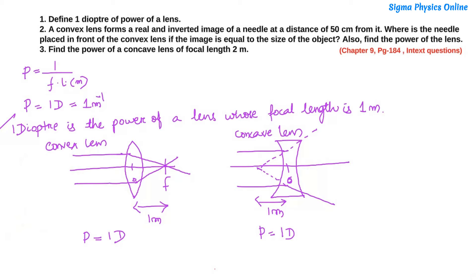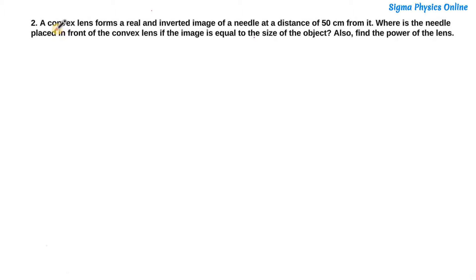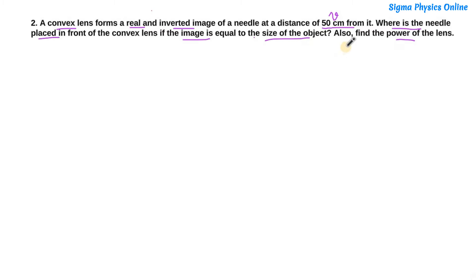The next question: we have a convex lens which forms a real and inverted image of a needle at a distance of 50 centimeters from it. So the image distance is 50 centimeters. We have to find where the needle is placed in front of the lens, given that the image size equals the object size, and also find the power of the lens. Let's draw the diagram — this is a convex lens, and the image formed is real and inverted, so it's formed on the other side of the lens, towards the right.